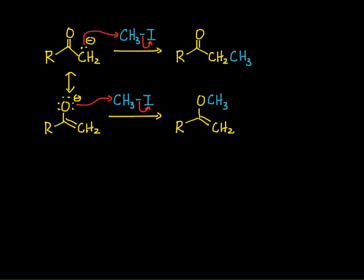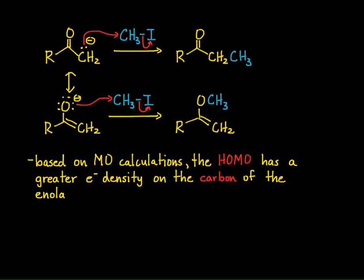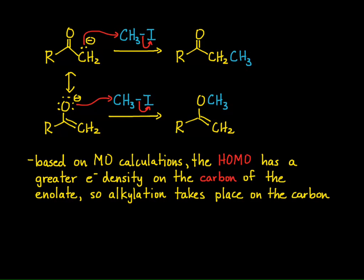So these are the two possibilities. It happens that based on molecular orbital calculations, the highest occupied molecular orbital has a greater electron density on the carbon of the enolate rather than the oxygen. So alkylation always takes place on the carbon itself.